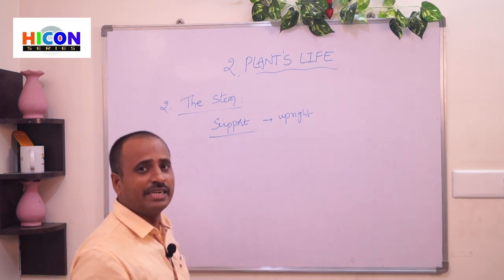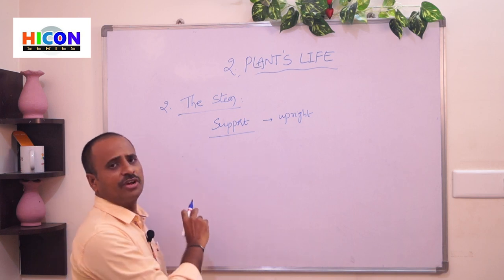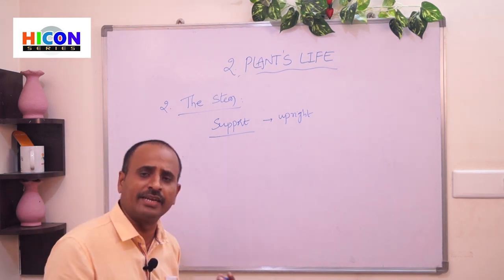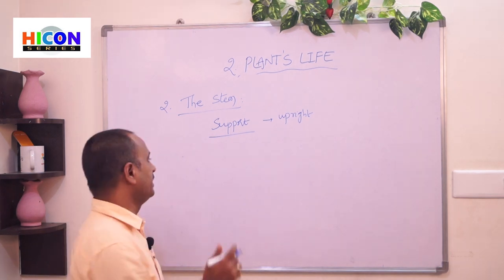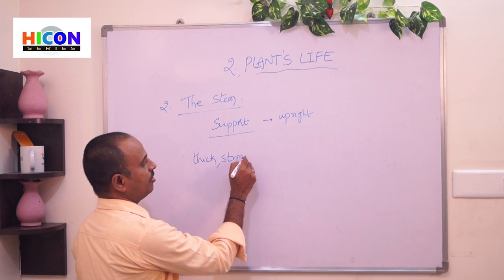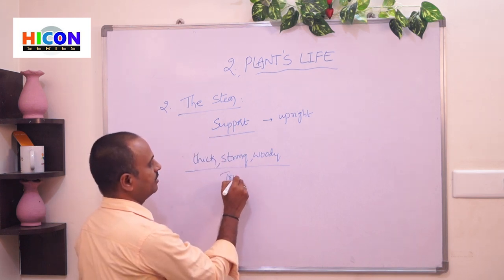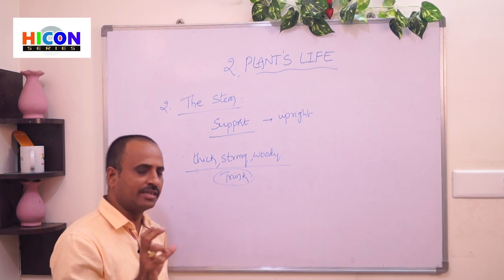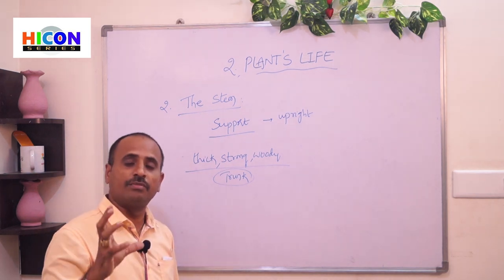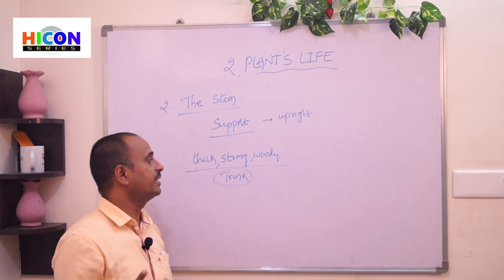Different types of plants have different types of stems. Some plants are very big and large with a lot of branches, and their stem is very thick, strong, and woody — that type of stem is called a trunk. For example, the stems of banyan tree, mango tree, and neem tree are thick, strong, and woody, so they are called trunks.